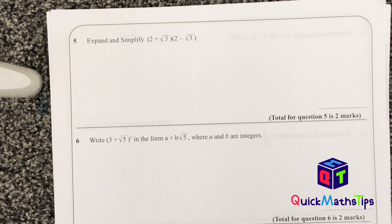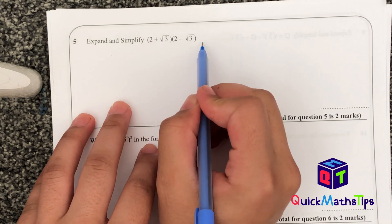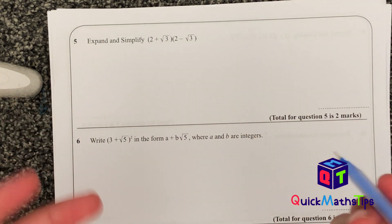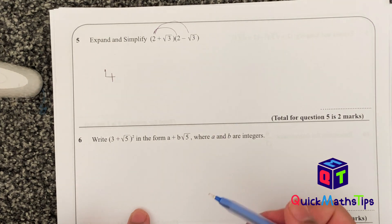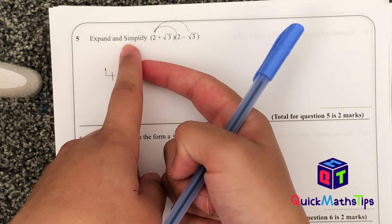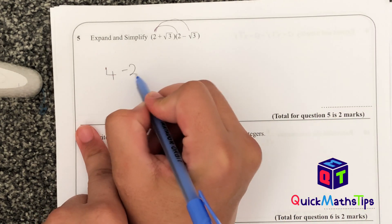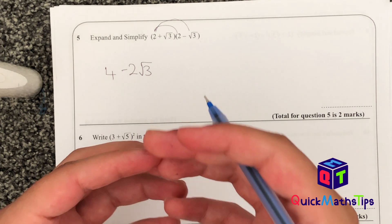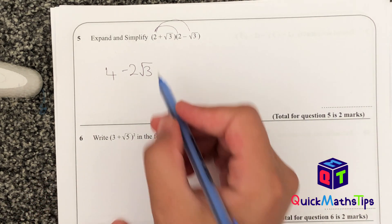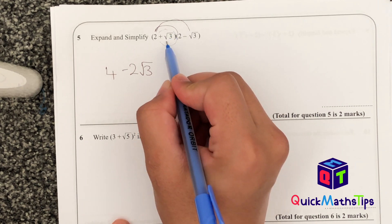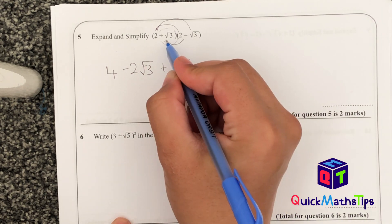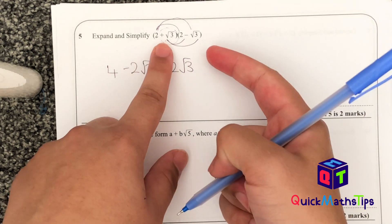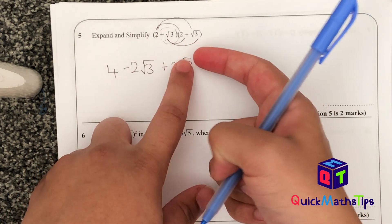Next question says: expand and simplify these brackets. The 2 multiplies by everything in one bracket, and the root 3 multiplies by everything in the other bracket. First, 2 multiplied by 2 gives 4. Then 2 multiplied by minus root 3 gives minus 2 root 3 — treat root 3 like an x. Then root 3 multiplied by 2 gives plus 2 root 3.